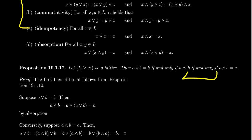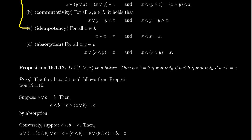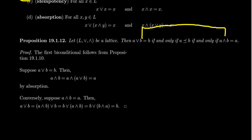What remains to show is that A ≤ B if and only if A meet B equals A — these two statements are equivalent to each other. So suppose A join B equals B. Let's look at A meet B. By assumption, B equals A join B, so substituting we get A meet (A join B). By the absorption axiom, this equals A. So we get A meet B equals A when A join B equals B.